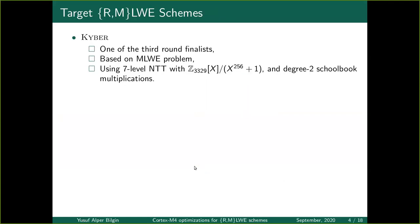Now let me talk about our target schemes. The first one is Kyber. It is one of the third-round finalists and fast on almost every platform. Its security is based on the module learning with error problem. Polynomial multiplication is performed using NTT, number-theoretic transform. It uses a seven-level NTT with Z_3329[x] modulo x^256 + 1. This ring does not fully split, so we do not carry out the full NTT but stop before reaching the level of finite field arithmetic. The coefficient-wise multiplications in the NTT domain are done on degree-2 small polynomials, using the schoolbook method.